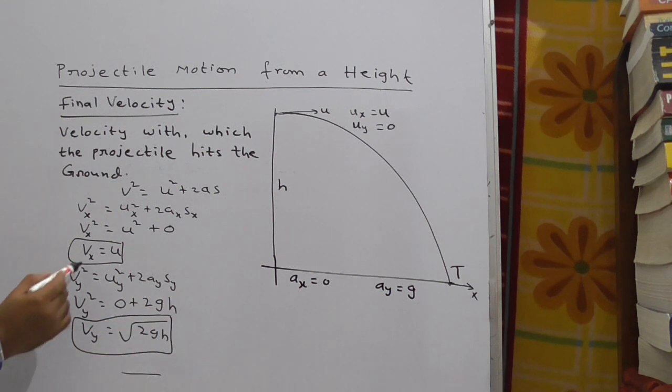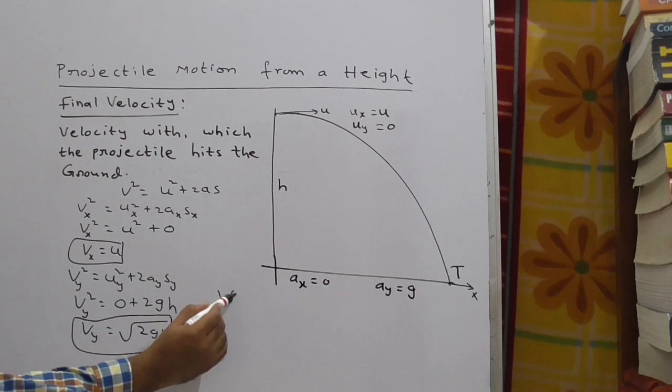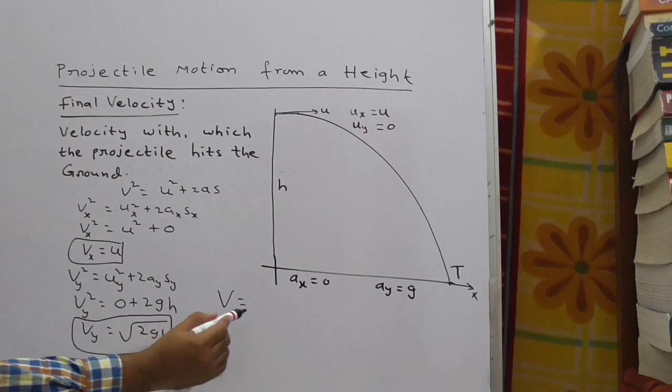We got v_x = u and v_y = √(2gh). So finally what we have to get? We have to get final velocity that is V. So what is V here?